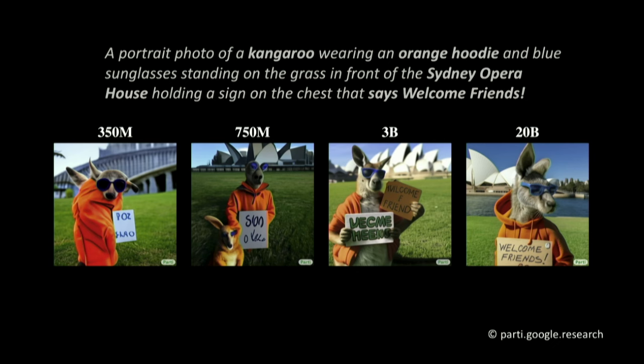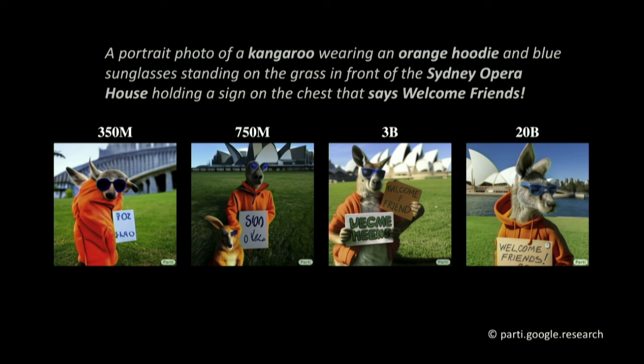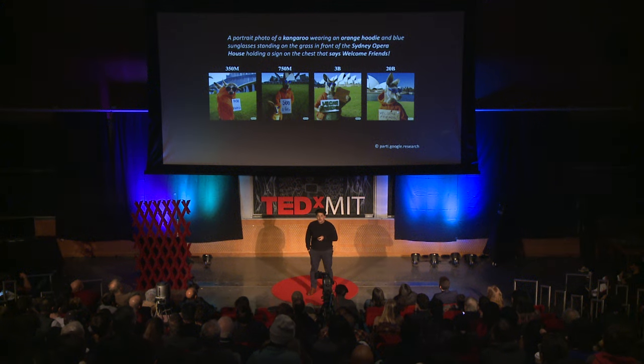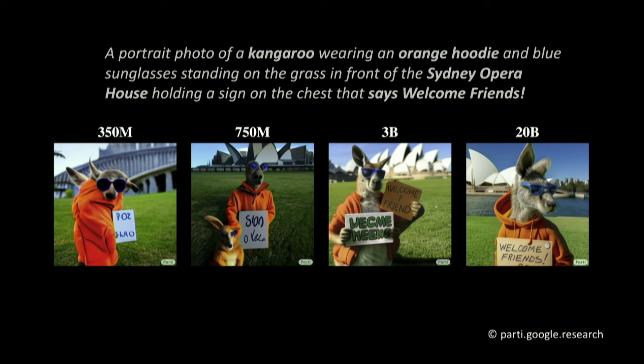In this example, I'm showing you outputs of an AI system that receives textual input and translates it into images, having learned from a large corpus of data. The text we are asking this system is: a portrait photo of a kangaroo wearing an orange hoodie and blue sunglasses standing on the grass in front of the Sydney Opera House, holding a sign that says 'welcome friends.' The model on the left generates almost none of the features — it produces almost a dog — and has 350 million parameters. As we make the networks larger, image fidelity increases. The one on the very right has 20 billion parameters and captures everything we asked.